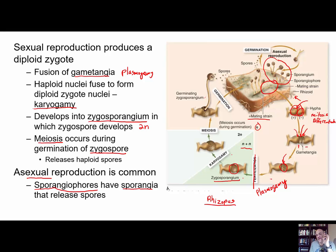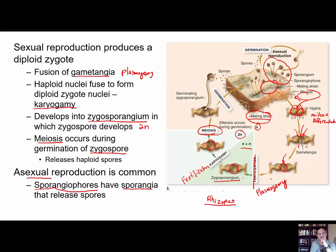Then the nuclei fuse — one plus nucleus combining with one minus nucleus for all nuclei — through karyogamy (essentially fertilization). Now within your zygosporangium you have diploid nuclei that go back to haploid through meiosis occurring within. Those spores then germinate and grow hyphae, producing haploid spores by mitosis and differentiation. These spores have one set of chromosomes, but those chromosomes are recombinations of the original parent strains — this essentially represents sexual reproduction in the Zygomycota.